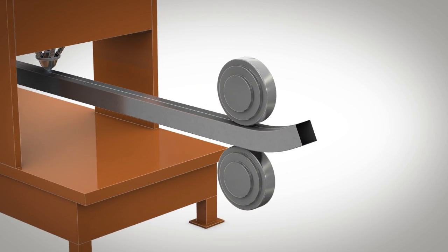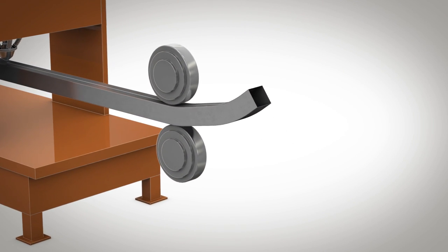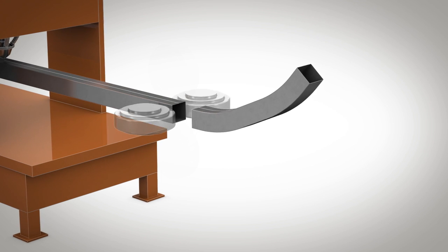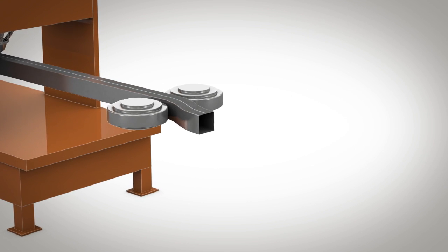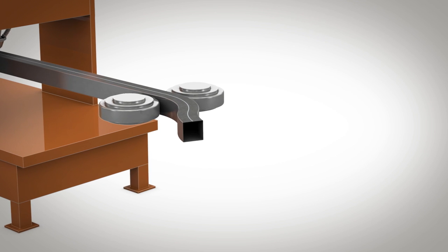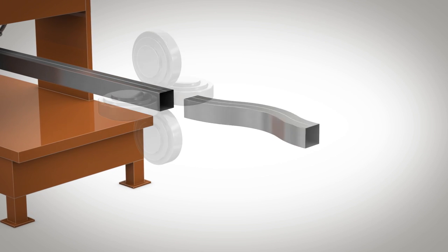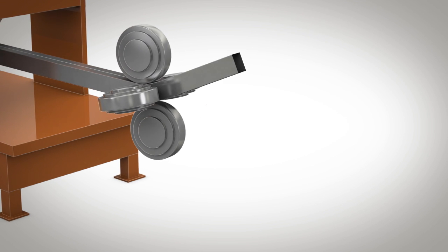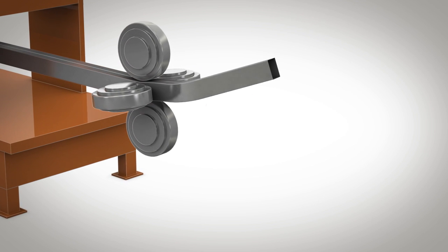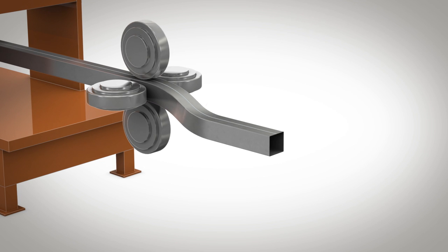This is followed by the inline sweep changing the shape further in one, two, or three directions. Roll forming can use martensitic steel up to 1700 megapascals.